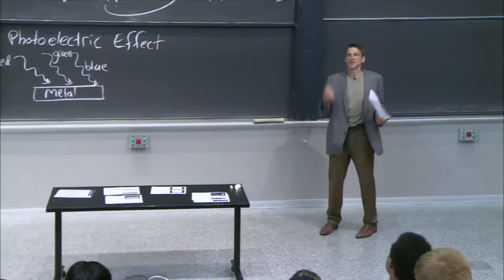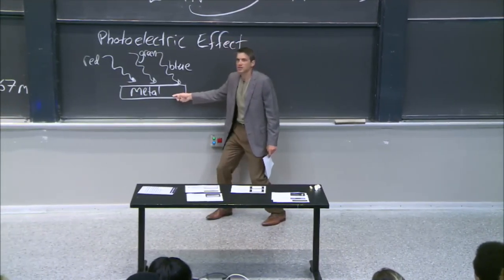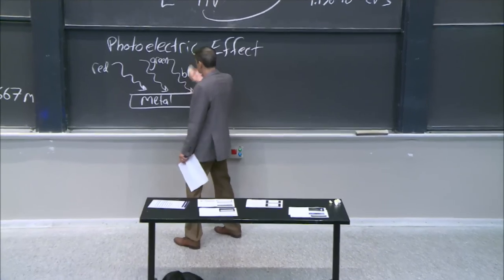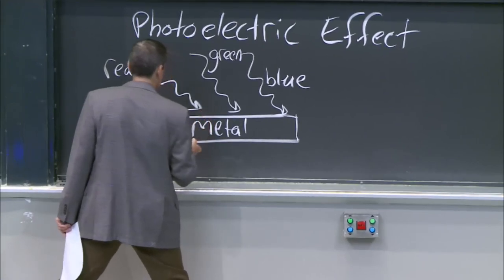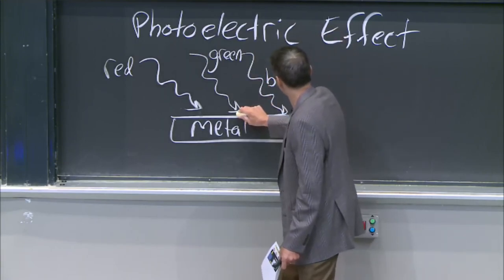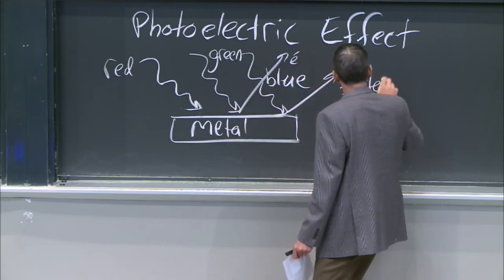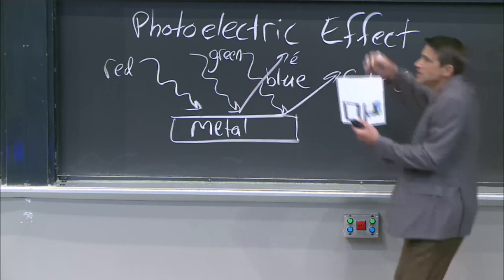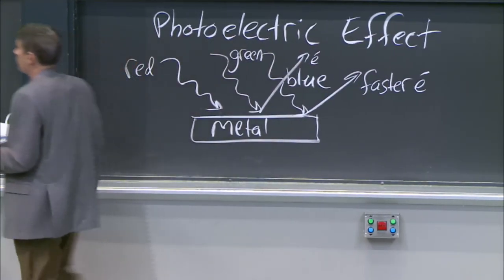Einstein says these must be particles — they must have some energy associated with the particle that follows E = hν. Notice that doesn't depend on intensity, it just depends on frequency. So I might be hitting this metal with more and more photons, but each one only has the same amount of energy limited by that relationship. If I want to hit those electrons with more energy, I've got to change the frequency.